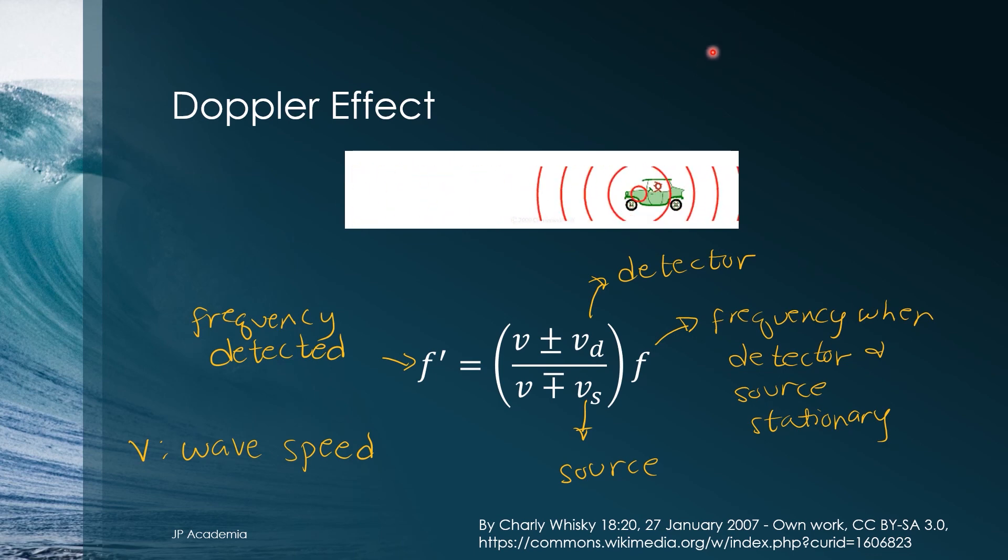While when the source moves away, a lower frequency is heard. We have this expression for the frequency detected F prime which is equal to this quantity. This refers to the detector speed, the speed of the source, the wave speed, and the frequency when the detector and the source are stationary.